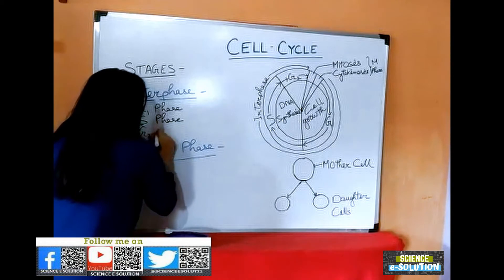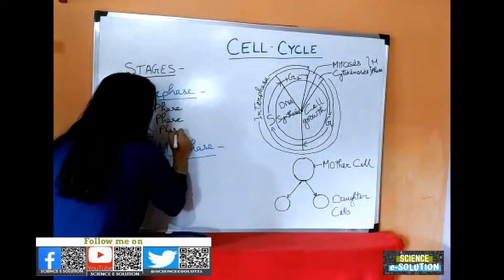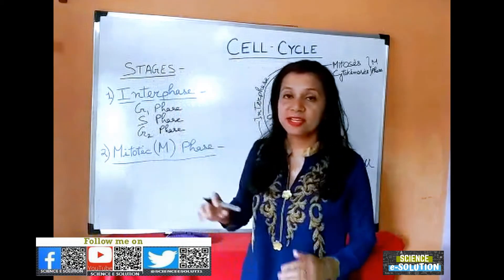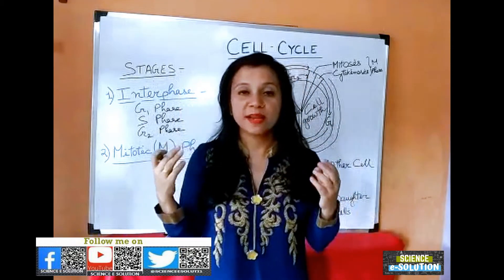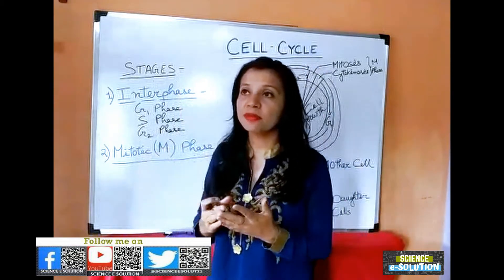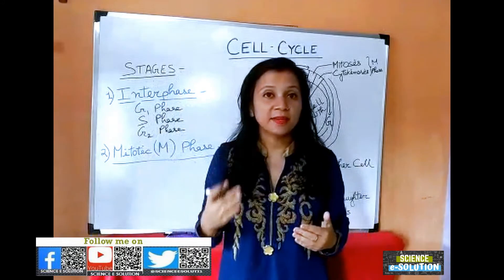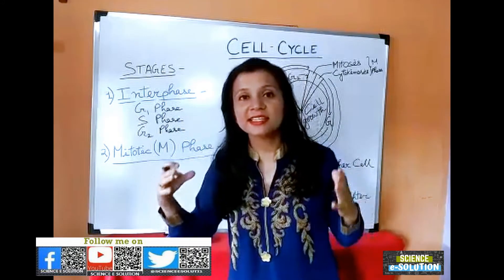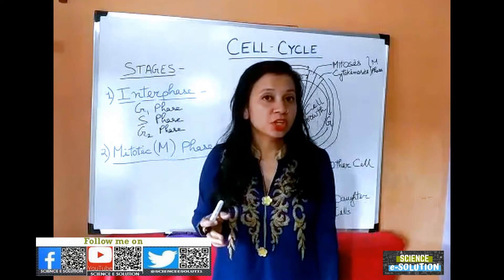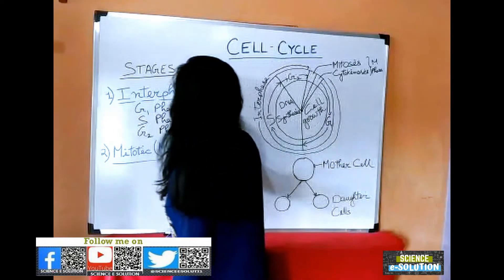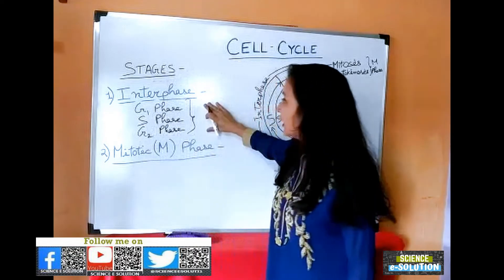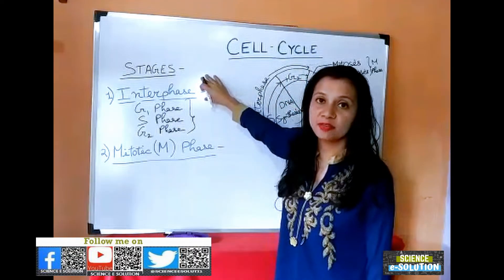The third phase is the G2 phase. G2 phase is again the cell growth phase in which growth occurs, cytoplasm increases in amount, more proteins are formed, and cell organelles replicate and reorganize for the cell to divide into two daughter cells. So G1, S, and G2 together combine to form the interphase.